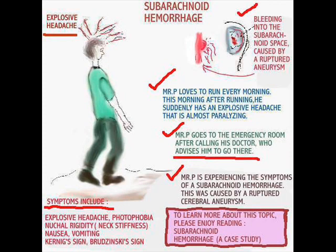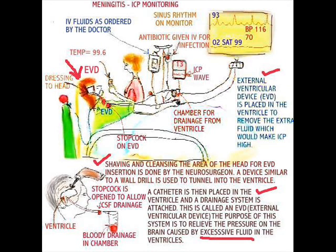Intracranial pressure monitoring is usually done to control the amount of pressure in the brain. When a patient is brain injured — as in the case of a trauma patient, subarachnoid hemorrhage, meningitis, or even a stroke patient with bleeding into the brain — excessive pressure does a lot of damage to the brain. Not to mention something called herniation, where the brain may herniate down at the base of the skull. So the goal is to decrease that pressure.